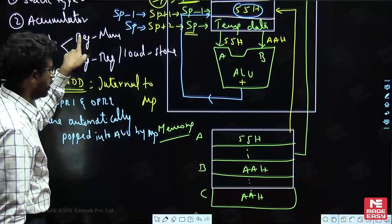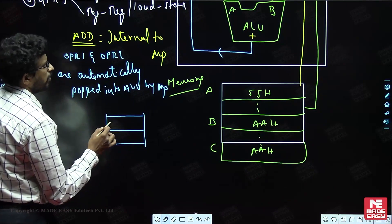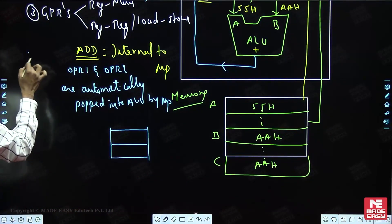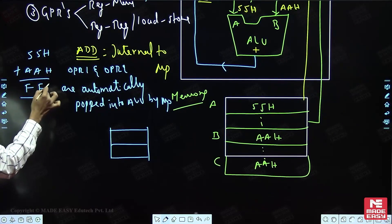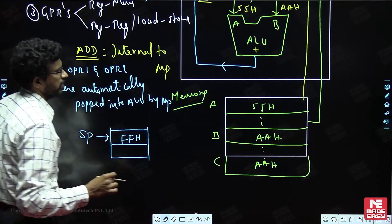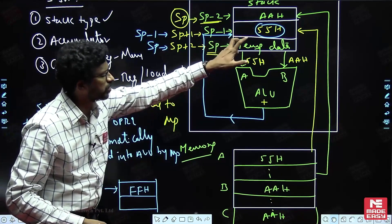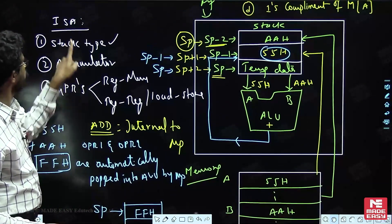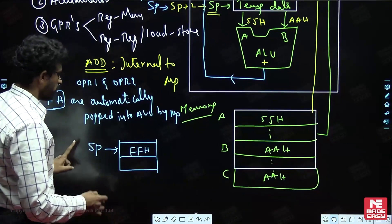After the ADD operation, the value at the top of the stack is FFH. The current stack pointer points to this location containing FFH. The next instruction is Push C. C contains AAH, so Push C means SP is decremented by 1 and AAH is pushed onto the stack. The current data at the top of the stack is now AAH.